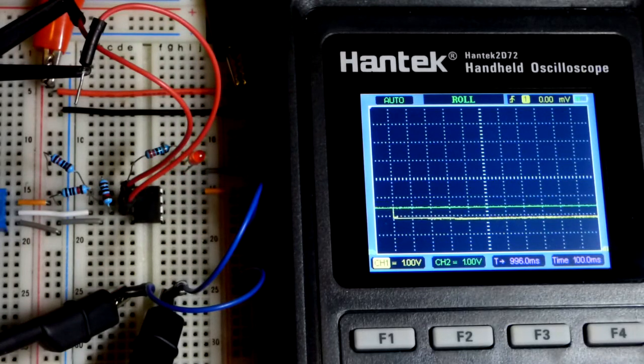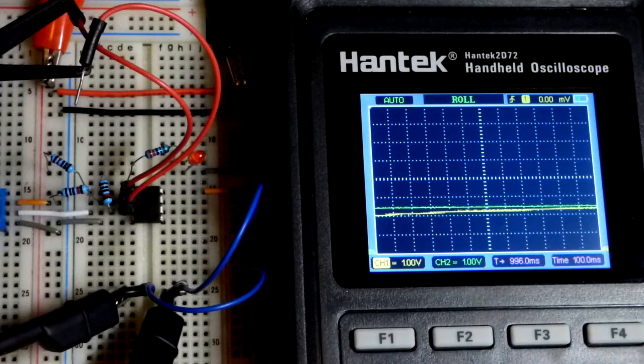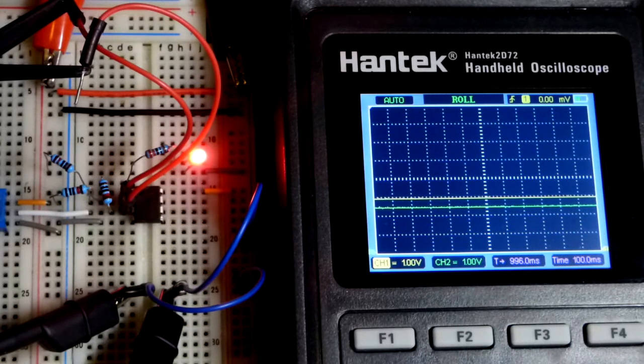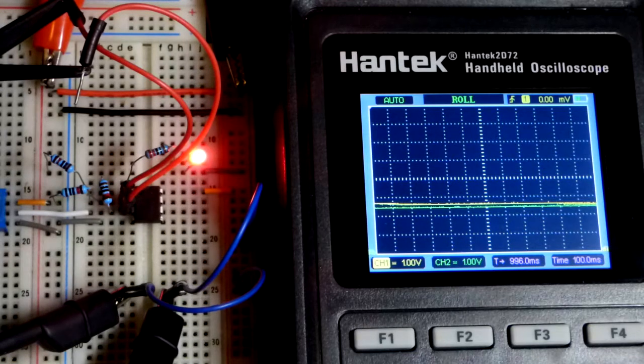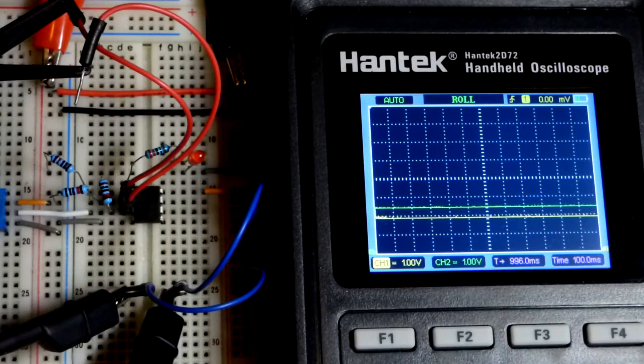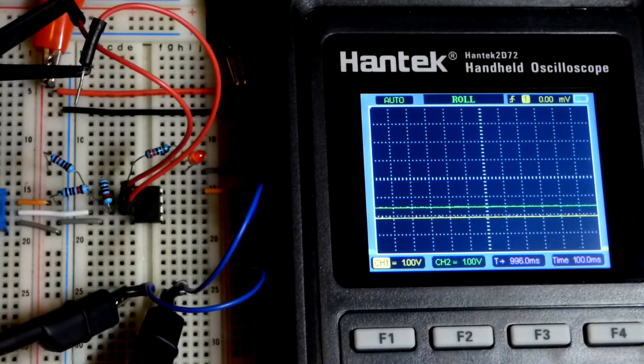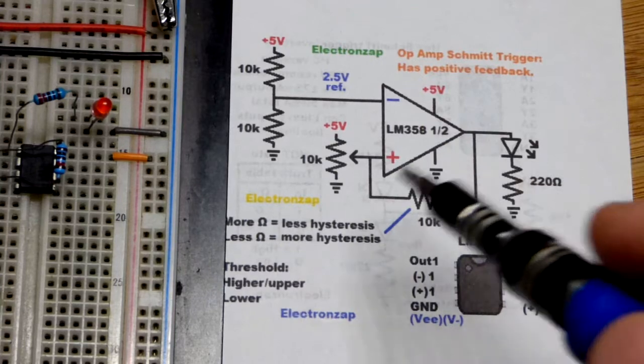We got positive feedback so that the voltage, when the input gets higher than our reference voltage, it pushes up even higher. So we have to drop it down a bit extra before it will drop low. And then it drops lower and holds it lower. So we've got to overcome that as well.